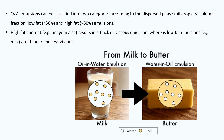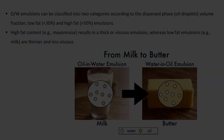Oil-in-water emulsions can be classified into two categories according to the dispersed phase volume fraction: low-fat and high-fat emulsions. High-fat content results in a thick or viscous emulsion, whereas low-fat emulsions are thinner and less viscous.